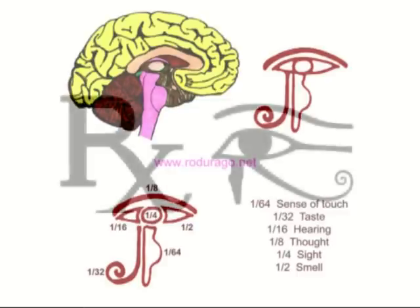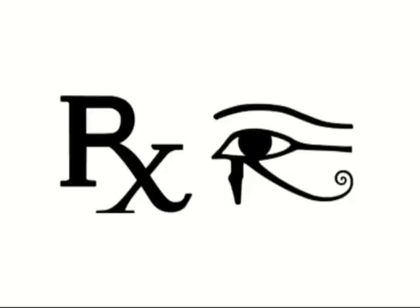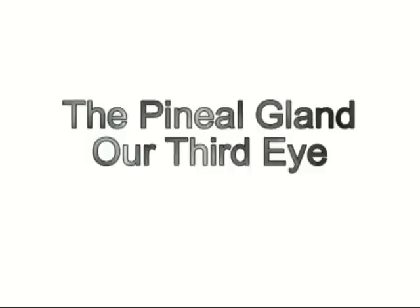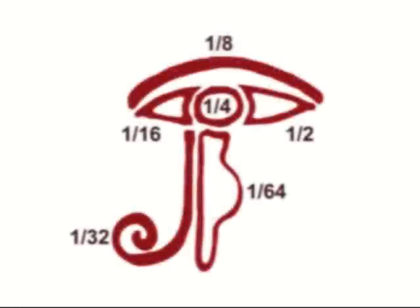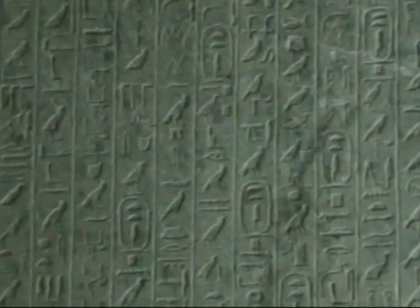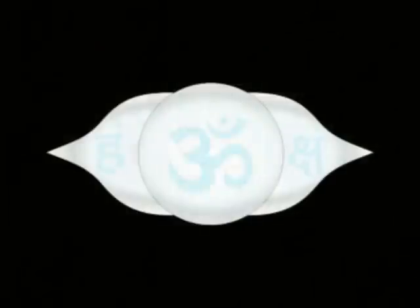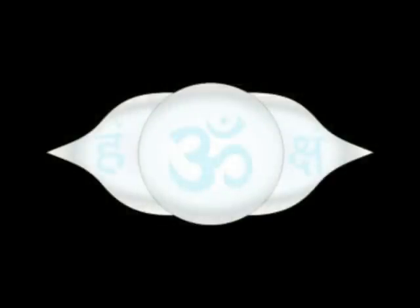The RX symbol one can find on pharmaceutical prescriptions has its origin in the eye of Horus. It is interesting to note that if the pieces are added together the total is sixty-three sixty-fourths, but not sixty-four sixty-fourths, which would correspond to the unbroken eye of Horus. So a sixty-fourth piece is missing. As we find in old hieroglyphic texts, the remaining one sixty-fourth — the hidden magical piece — Toth used to restore the eye. This piece corresponds with the human sixth sense: intuition.